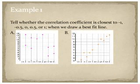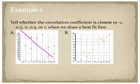I know that can be a little confusing, which is why we're going to look at our first example. This example asks us to tell whether the correlation coefficient is closest to negative one, negative point five, zero, point five, or one. The first thing we have to do is draw our best fit line to see how close this line will be to our points.